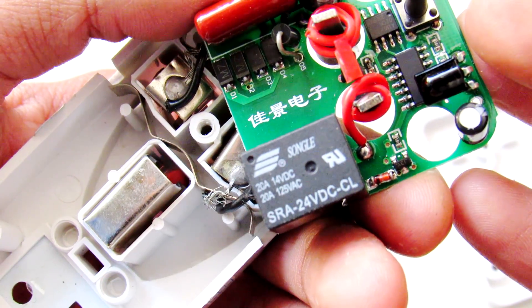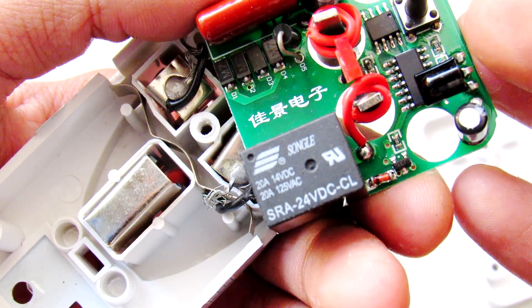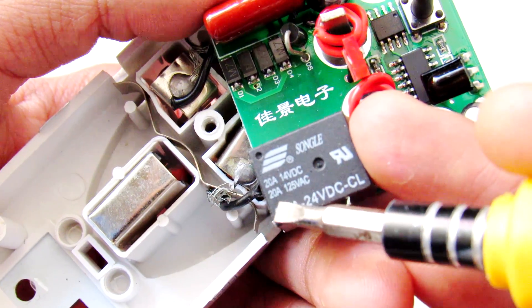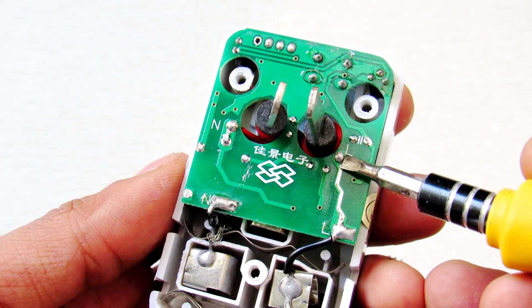And this is rated for 125 volt AC 20 amp. So here is the trace for the live wire and the neutral which is going through the relay.